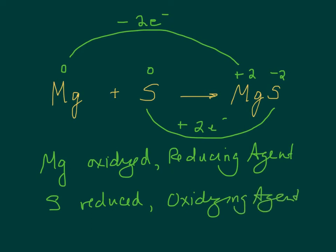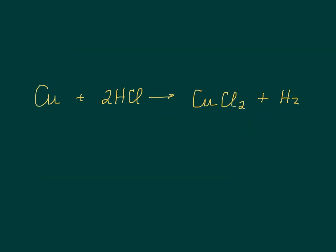Let's look at another example, maybe a little more complicated. I'm going to go ahead and assign oxidation numbers. Copper is zero because it's an element. Hydrogen is zero because it's an element. In HCl, hydrogen is plus one and chlorine is minus one. In CuCl2, copper is plus two and chlorine is minus one.